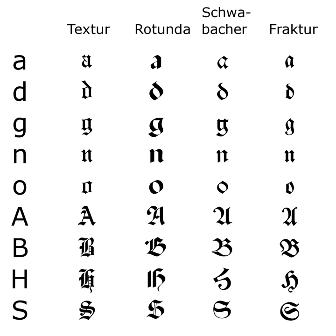In the 18th century, the German Theuerdank Fraktur was further developed by the Leipzig typographer Johann Gottlieb Emanuel Breitkopf to create the typeset Breitkopf Fraktur. Over the succeeding centuries, most Central Europeans switched to Antiqua, while German speakers remained a notable holdout.